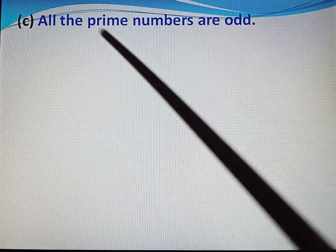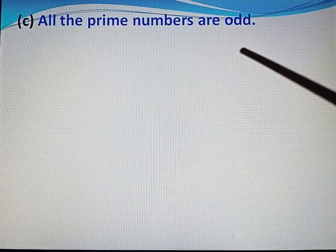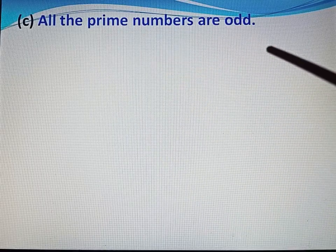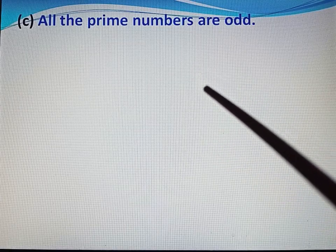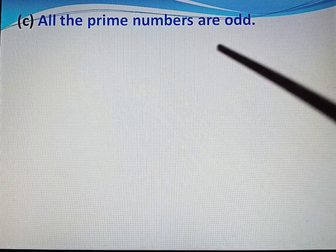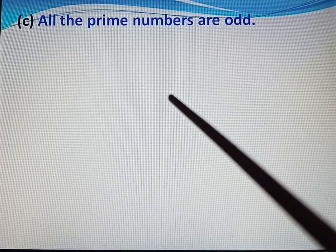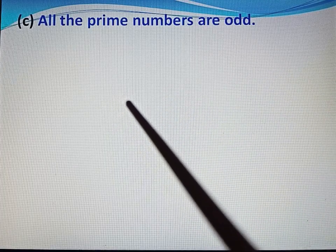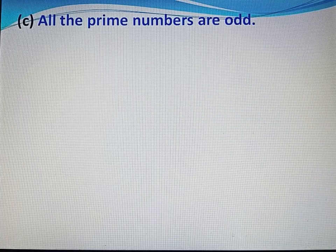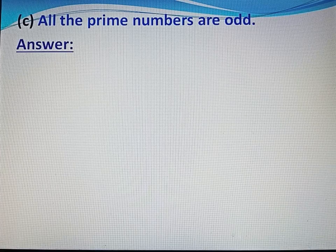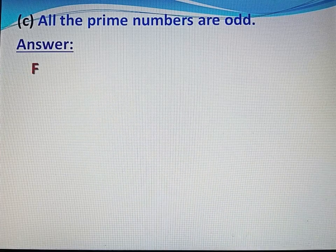Now come to part C. All the prime numbers are odd. No, this statement is false. All prime numbers are not odd — for example, 2 is a prime number but it is not odd; it is even. So this statement is false. Write F.